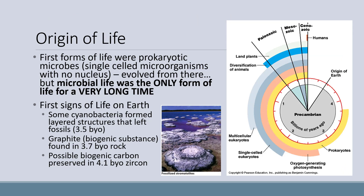The first forms of life on the planet were prokaryotic microbes — single-celled organisms with no nucleus or membrane-bound organelles. From that starting point, all other organisms eventually evolved, but microbial life was the only form of life on Earth for a very long period of time. You can see this from the timeline shown on the far right, where Earth's history is shown as the face of a clock. The Earth is about 4.6 billion years old. There was no life for quite a while as the Earth system became stable. Then prokaryotes evolved, shown in yellow.